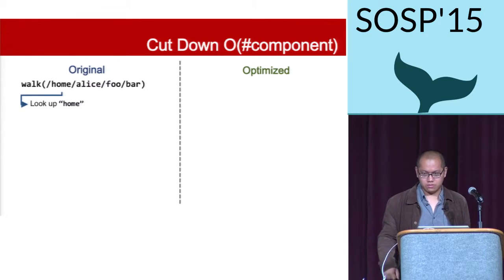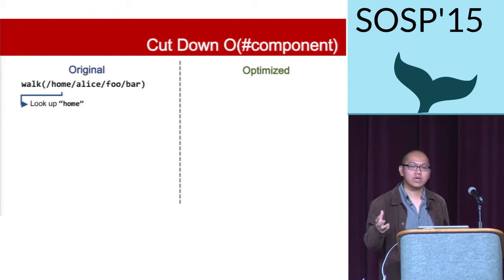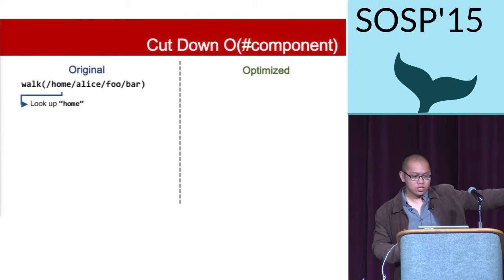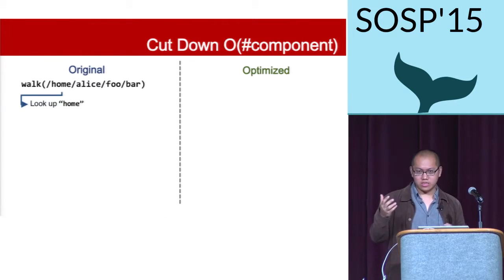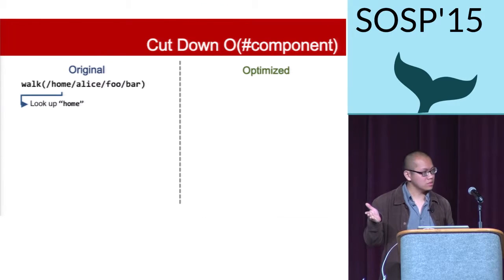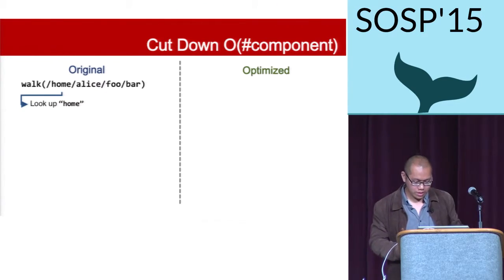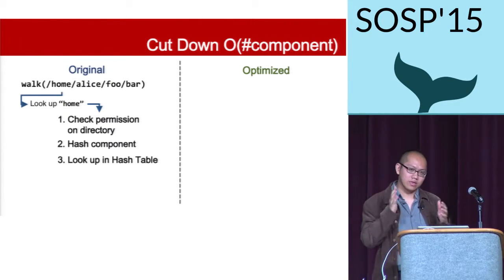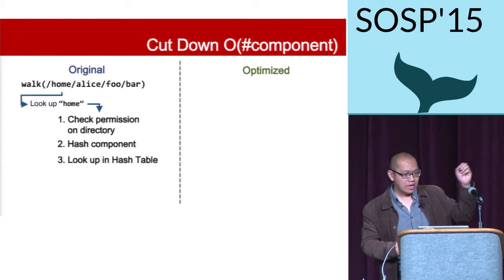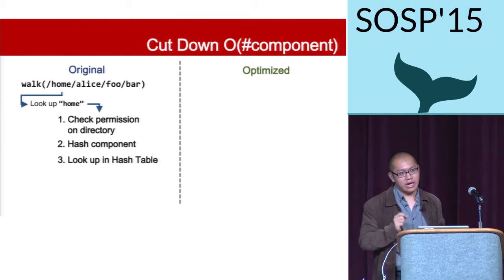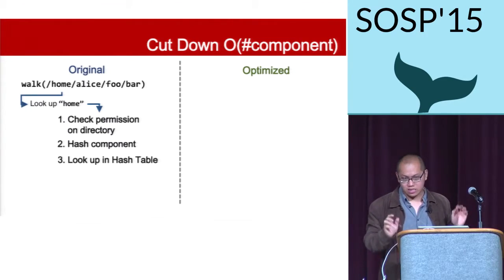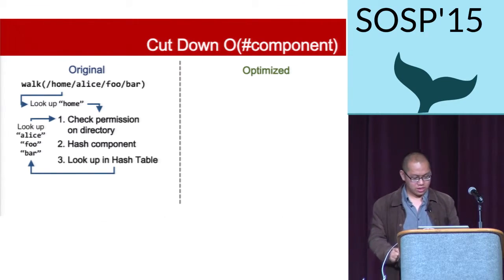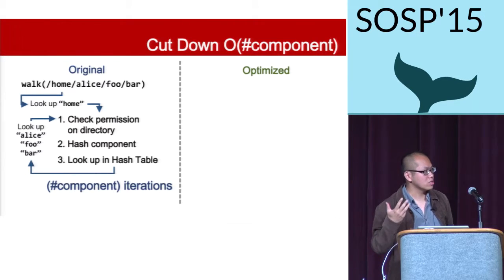The reason for this linear complexity in the Linux directory cache is its design. The original Linux directory cache has a lookup function — we call it the walk function — that looks up the path component by component. For example, to look up the first component 'home', you check permissions on that directory, then hash the component to get an index and look it up in the hash table. You repeat all these steps for every remaining component, so the number of iterations equals the number of components.